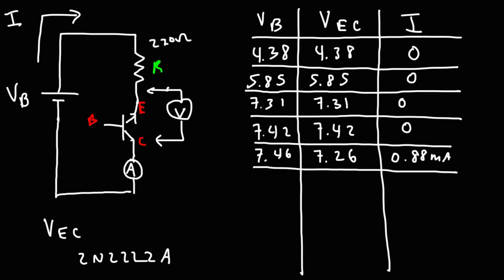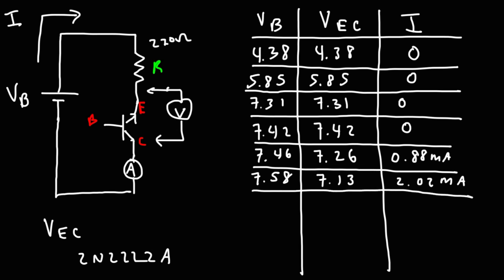Continuing the same process, the next voltage across the five batteries was 7.58 volts. VEC was 7.13 and the current increased to 2.02 milliamps. Replacing another old battery with a newer one, the next VB was 7.65 volts, VEC was 7.10, and the current was 2.43 milliamps.